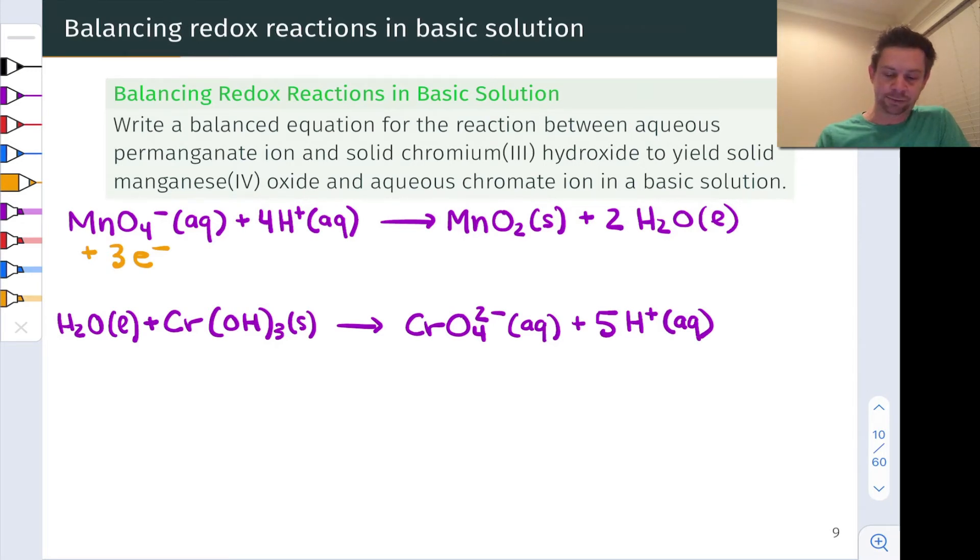And in the case of the bottom half reaction, I'm going to need to add three electrons to the product side. Notice that the net charge is plus three, five H pluses and a two minus from the chromate anion. So the three electrons ensure that that side of that half reaction is neutral, and the left-hand side is neutral involving only water and chromium-3 hydroxide. So we're all balanced up on charge now.